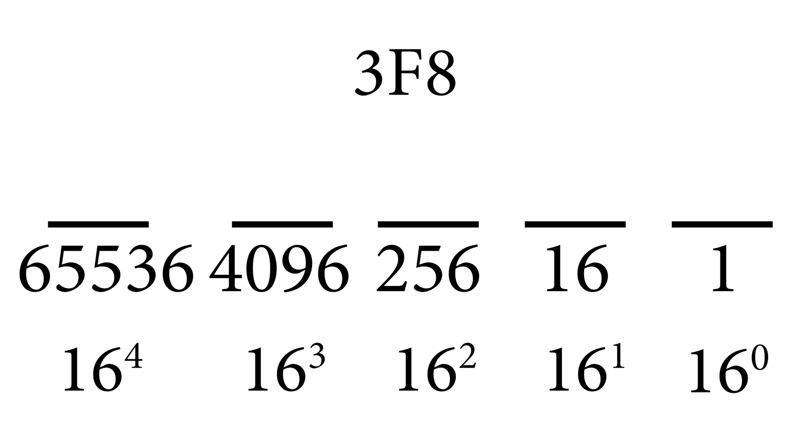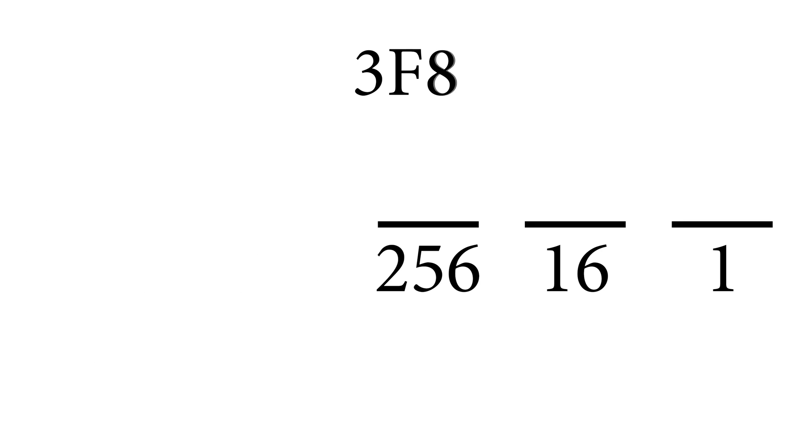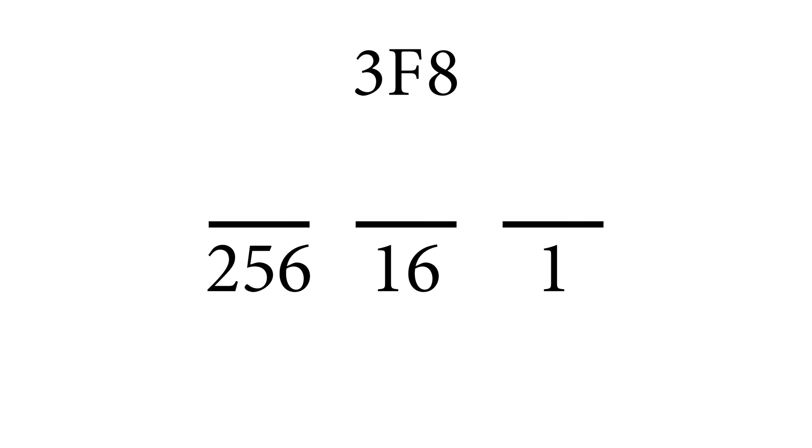So the first number is 16 to the power of zero which anything to the power of zero is 1. The next one is 16 to the 1 which is 16. The next one is 16 to the 2 or 16 squared which is 256 and so on and so forth. Basically every time we're just multiplying 16 together more and more.